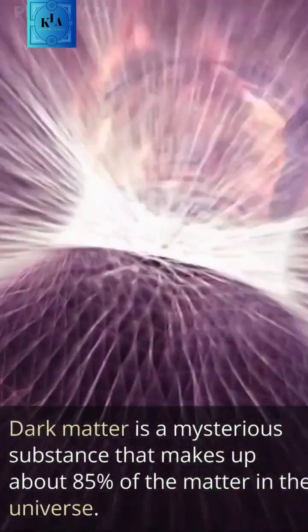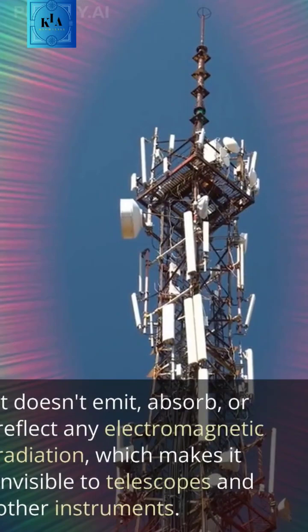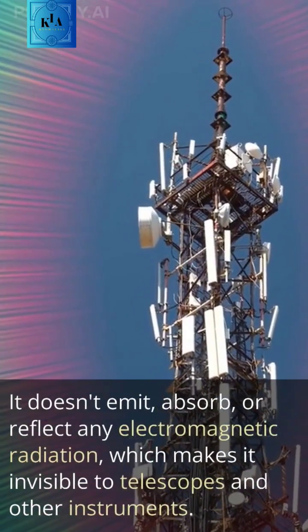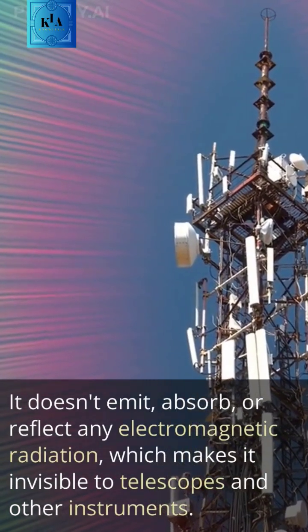Dark matter is a mysterious substance that makes up about 85% of the matter in the universe. It doesn't emit, absorb, or reflect any electromagnetic radiation, which makes it invisible to telescopes and other instruments.